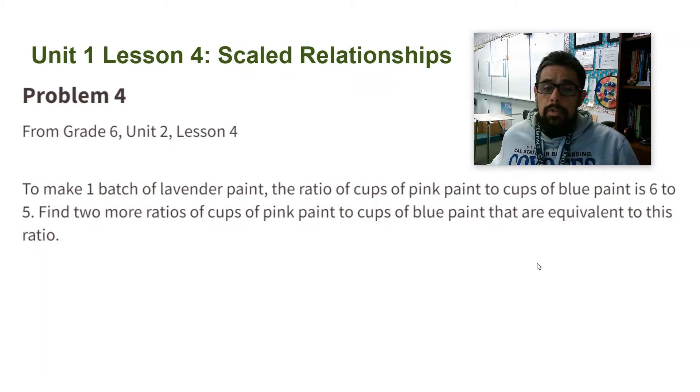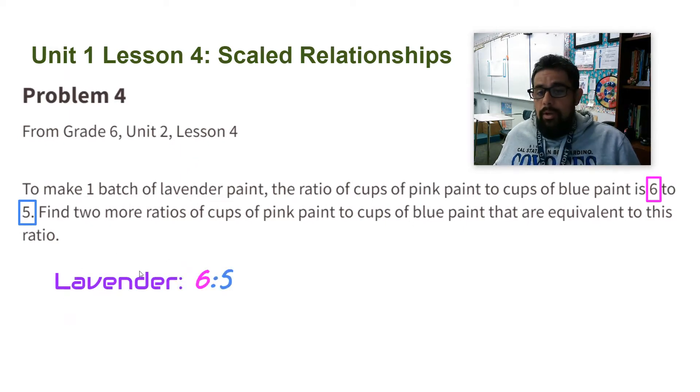So here we're doing ratios, sixth grade, easy. So I have 6 to 5, six parts pink to five parts blue is going to give me the lavender that I want. So that's the ratio right here: lavender is 6 to 5.